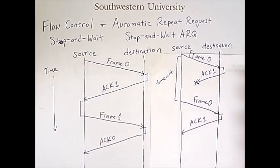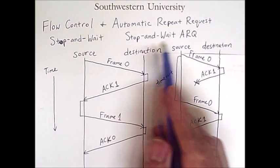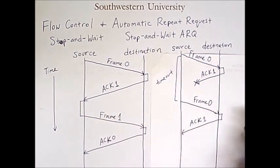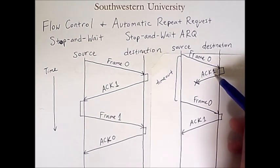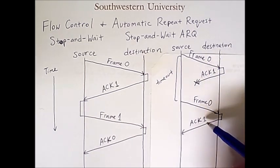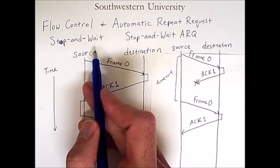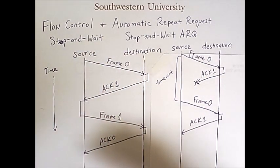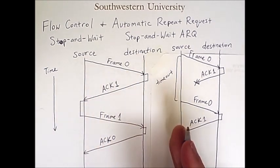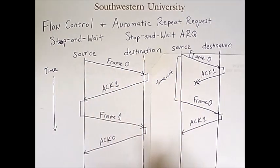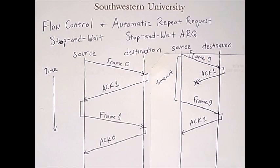This is an example of stop and wait ARQ — the scheme of sending acknowledgement packets asking for the next frame — which is inextricably linked to stop and wait flow control, the broader idea of sending frames and waiting between each one. In the next video, we'll talk about more complicated and more efficient forms of flow control and automatic repeat requests.